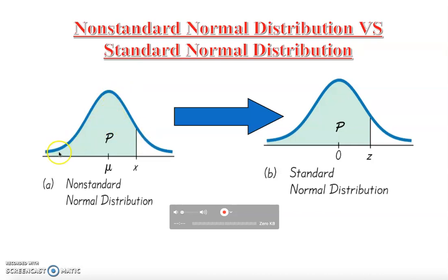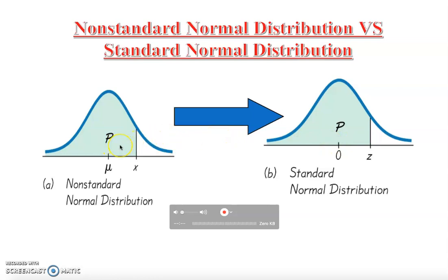The normal curve is symmetric on both sides — it starts on the left going up and then coming down at the same rate. Both curves shown here are normal curves, but the question is: which one is standard and which one is non-standard? We're going to learn why one is non-standard and why the other is standard.